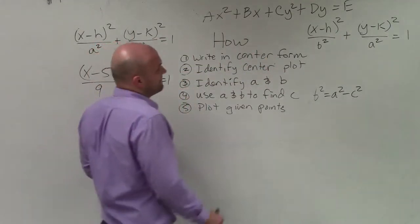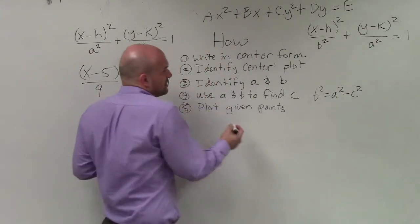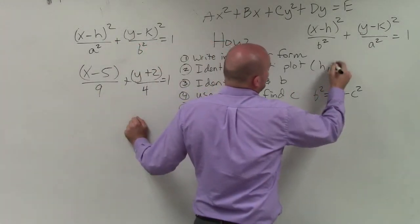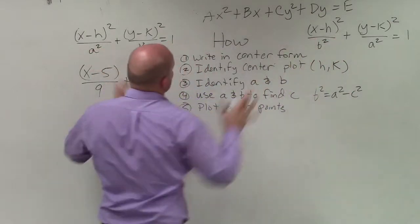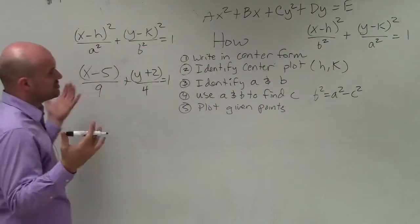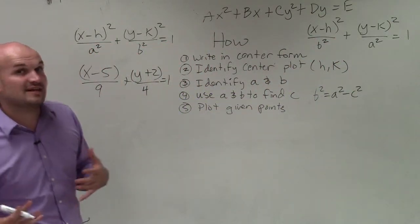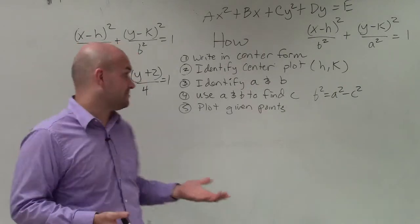Then the next thing we want to do is identify the center and plot it. Remember, we're trying to graph this. So the center can easily be formed as h and k when it's in these two formats. So we identify the values of h and identify the values of k, and then go ahead and plot them on the graph.